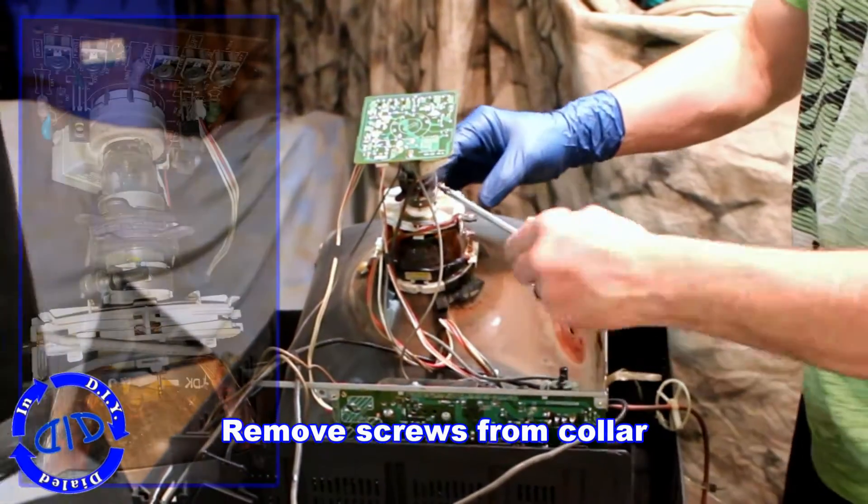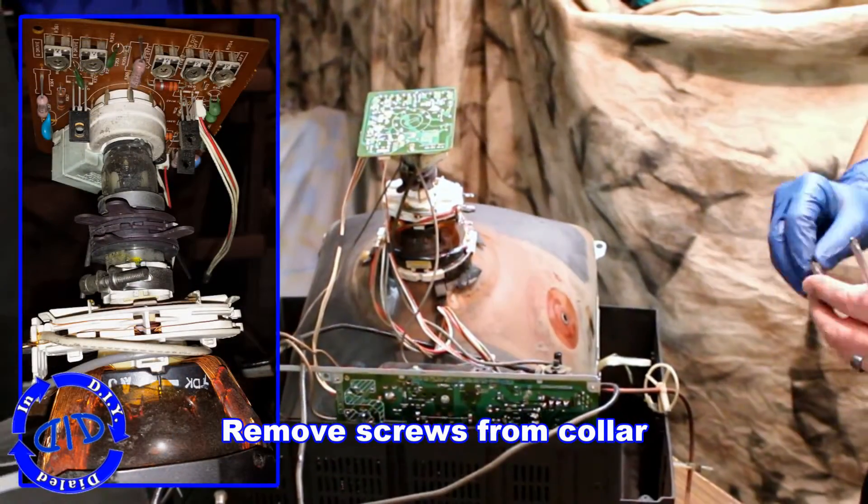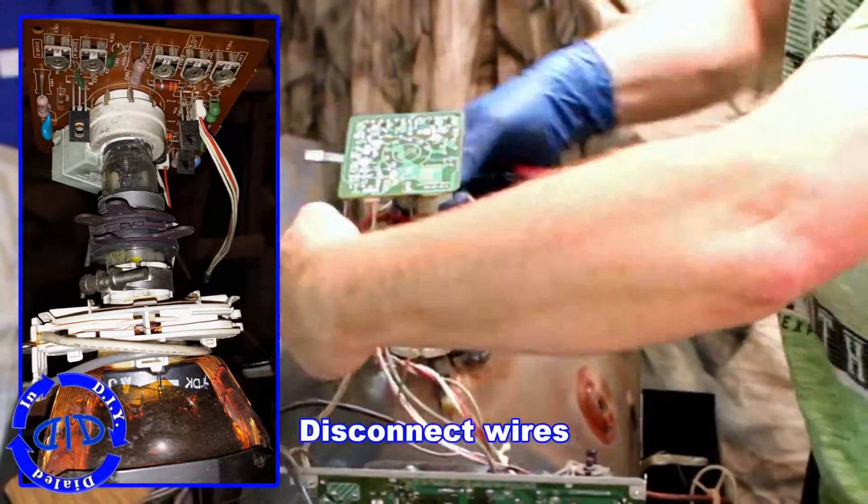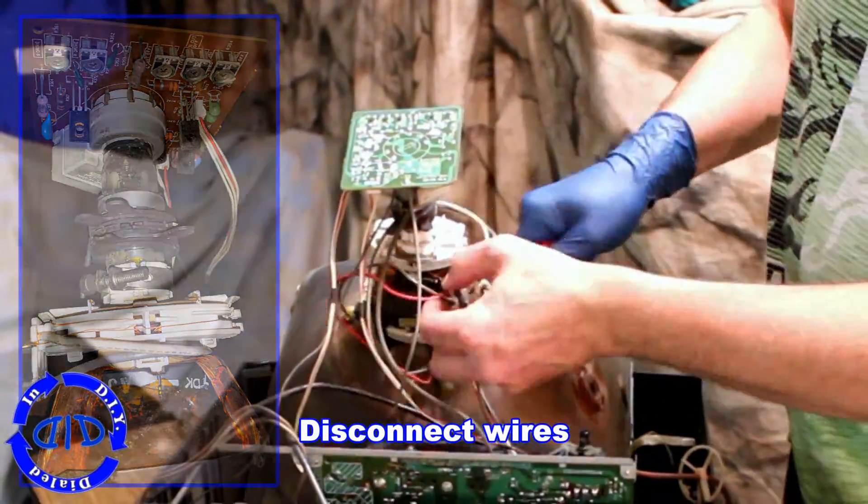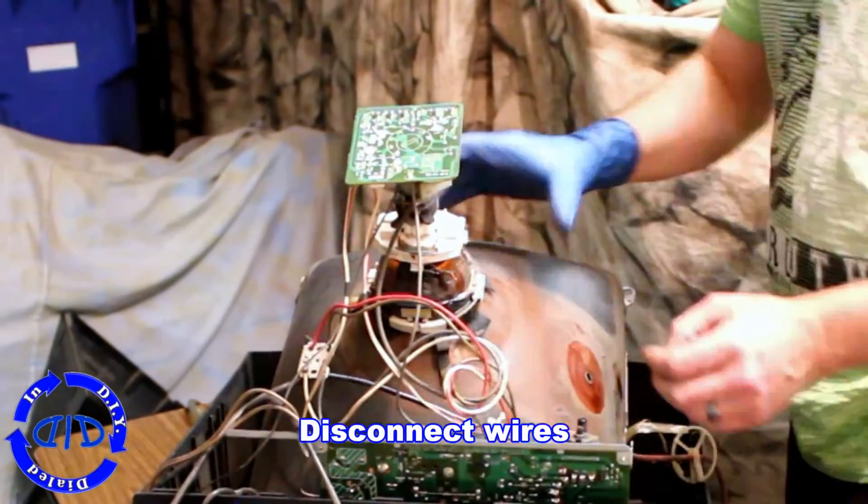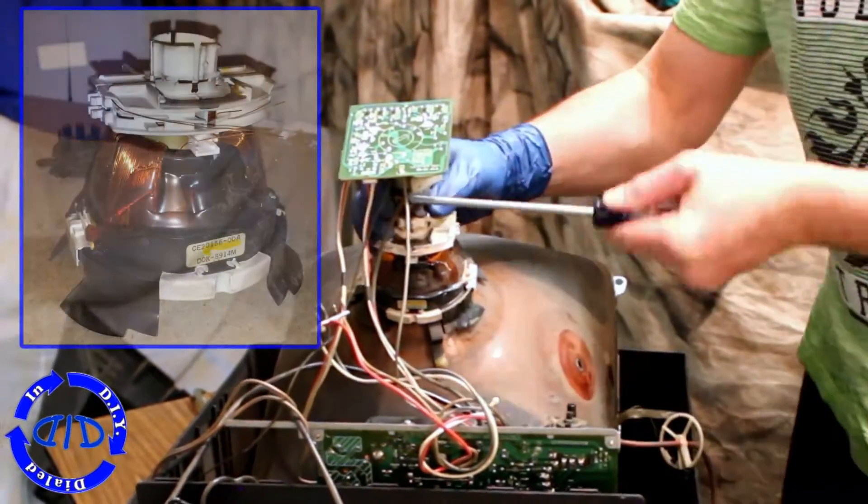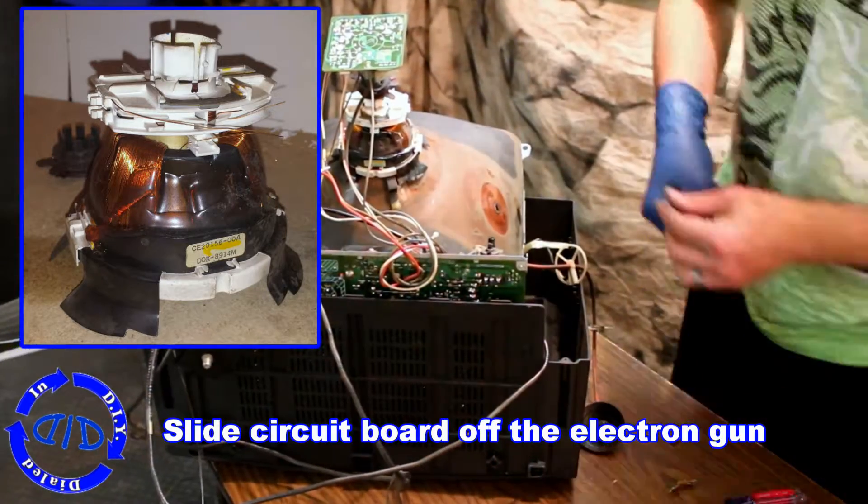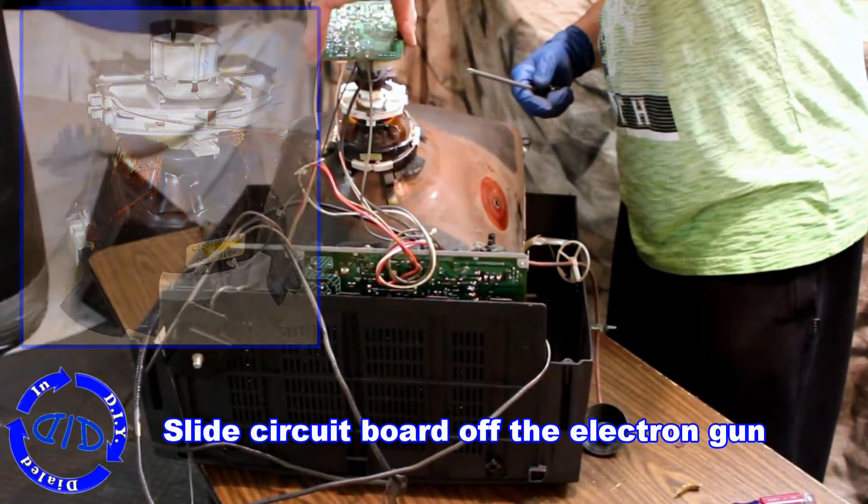Next I'm removing the screws from the clamps that hold the collar in place. I then move on to disconnecting any residual wires that are holding this circuit board in place. The ultimate goal is to free up all connections that are holding this tube into the case so that I can get the tube out of here and continue to work on the remainder of the parts.